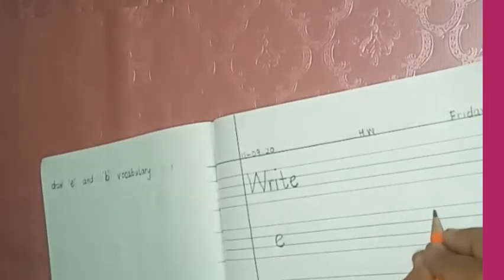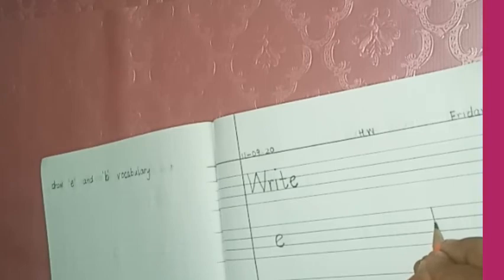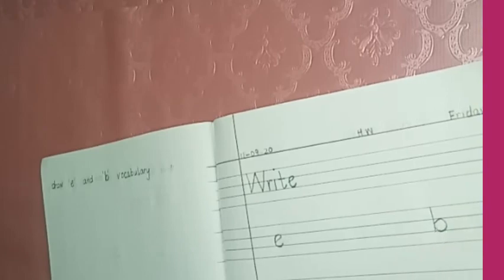You will write B. Make a standing line. Go up. Stop. Make a slant line. Touch the black line and make a round. Like this.